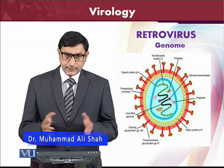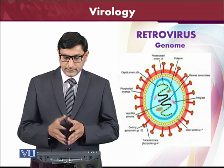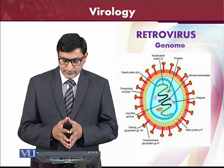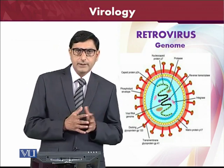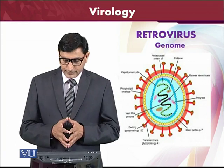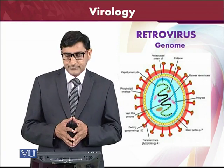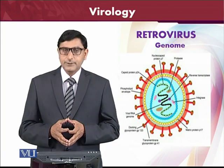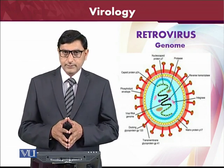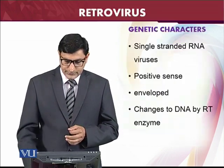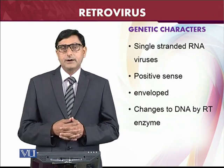The transmembrane glycoprotein gp41 is there for the spikes, and the surface glycoprotein gp120 is also present. The viral RNA genome consists of two identical RNA copies. The phospholipid envelope is there, which will be transcribed by the env gene. The protein p24 is present for the capsid, the nucleocapsid protein p7 is there, and protease proteins are also present. We will see them in detail.